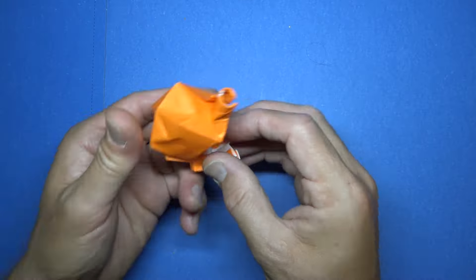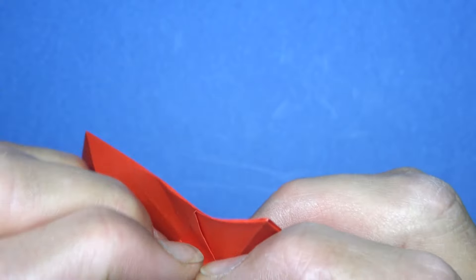And rotate. And now insert one of the flaps into the pocket of the other. So right like that. It doesn't matter which pocket, but I'm going for the colored one. And now fold this flap over. Crease it sharply. And bend just to make sure that they stay locked together.